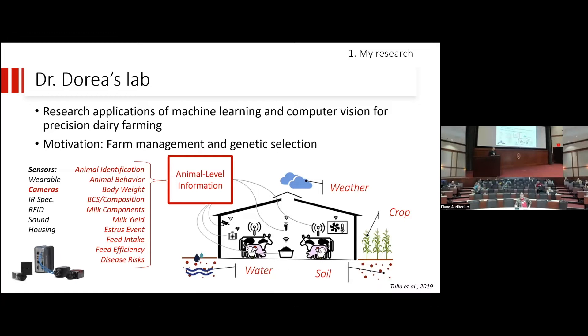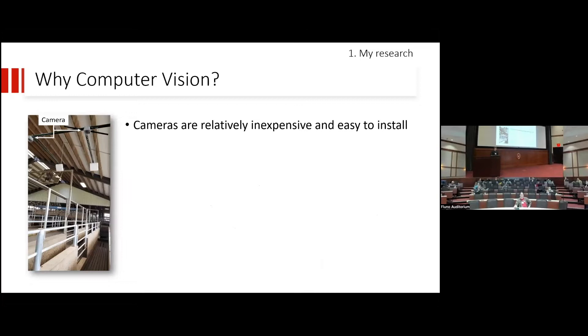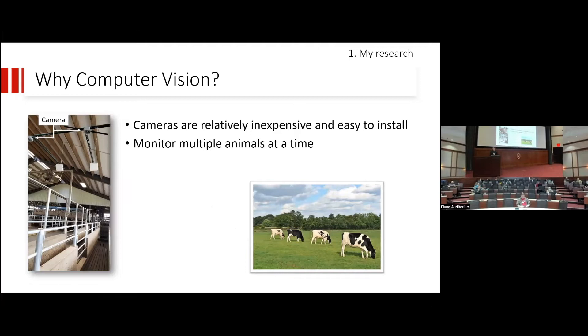We do all that using sensors. We can use wearable sensors installed in each of the animals, infrared spectrography for the feed, RFID tags to identify the animals. And finally, what we focus the most in our lab is on the use of cameras and computer vision. The reason why we do that is that cameras are relatively inexpensive and easy to install. Here we have a picture of a few cameras installed at the Dairy Research Facility at Arlington. What is nice about them is that a single camera can monitor multiple animals at the same time and it can work 24 hours a day, seven days a week without interruption and without being intrusive to the animals.